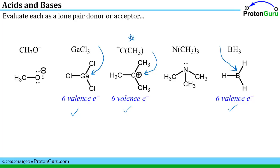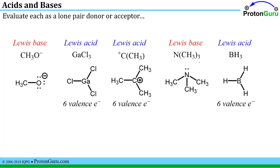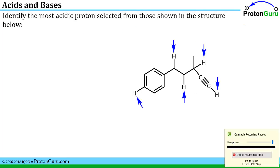An atom that has fewer than the octet of electrons in its valence shell will be able to accept a pair of electrons, so gallium, carbon, and boron are Lewis acids. On the other hand, the anionic oxygen has lone pairs to give, as does the neutral nitrogen — so we label those as Lewis bases, the lone pair donors, and the others as Lewis acids, the lone pair acceptors.